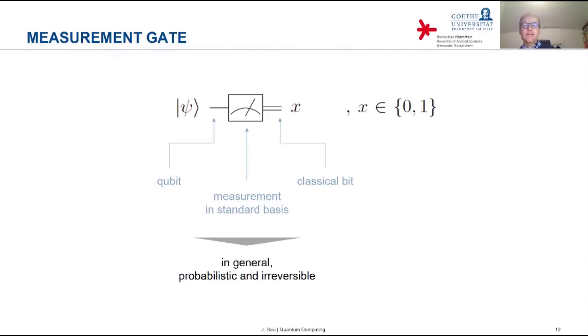I mentioned before, this is a step which in general is probabilistic and irreversible. Unless you know for sure in advance that the quantum state that's coming in is a basis state. In that case, the measurement result is certain. And also, if you know that it's a basis state, then from the result you can infer which basis state it was. But leaving aside the special case, this is probabilistic and irreversible.